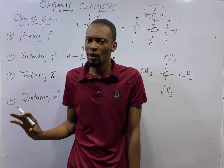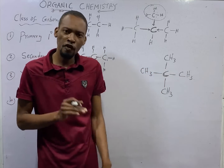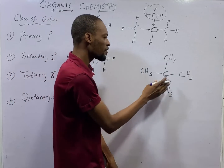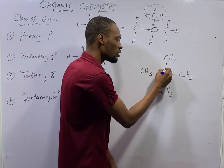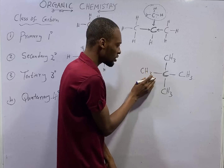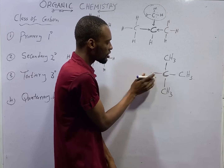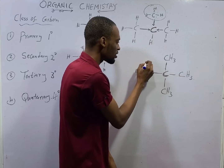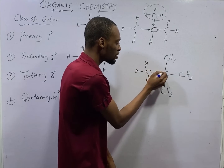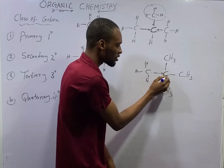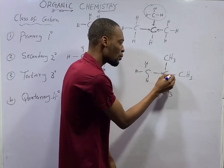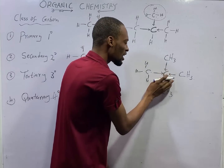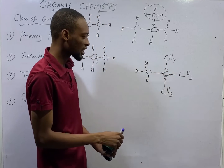Similarly, quaternary carbon is a carbon atom that has four other carbons directly linked to it. If you look at this carbon, this carbon is linked to it, this one is directly linked to it, and CH3 — which is C with three hydrogens — is also directly linked to it. So this particular carbon is a quaternary carbon.